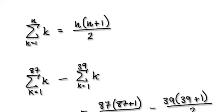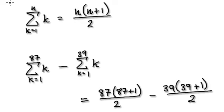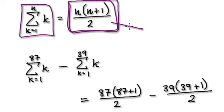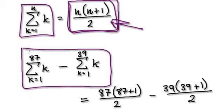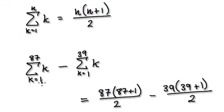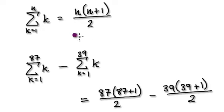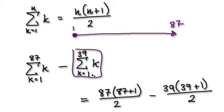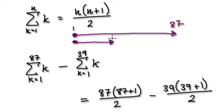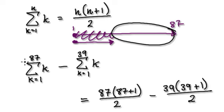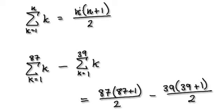Let me give you some random things you can do with summations. In one of the early videos we've seen the formula for working out this summation. When given this here, you've got from 1 to 87 and you're taking away from 1 to 39. So basically you cut this away — this here is your answer.